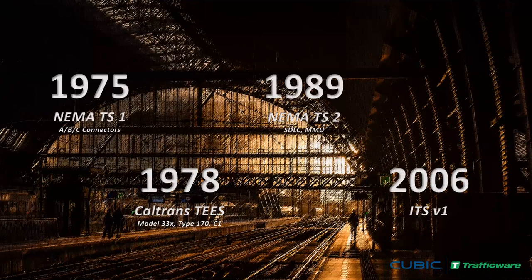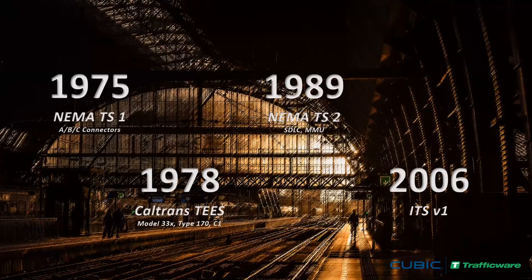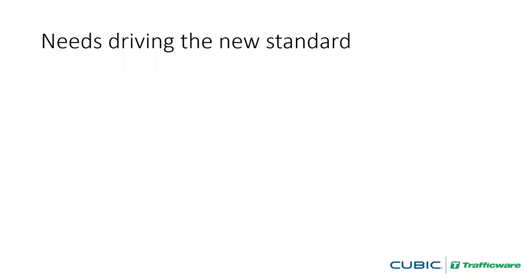The overall point is that these standards are old — we're still effectively using technology approaching 50 years old. This also divided the world into two camps: an agency is either a NEMA user or a Caltrans 170/2070 user. Given the age of these standards, the industry started looking at this about 10 years ago and decided it was time to move on, starting work on the next generation of traffic cabinet architecture.